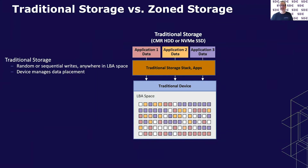Before I talk about the track itself, I want to give a little bit of a contrast between traditional and zone storage, which is the reason we're having this track. So in a traditional storage system, the host does random or sequential writes anywhere in the LBA space of the device, and then the device manages all the data placement. If the host writes sequentially, you'll see sequential IO, like these purple regions here, which have been ostensibly written sequentially, or this kind of pink ones here. If the host writes randomly, you'll get small spaces and blank spaces in the LBA space.